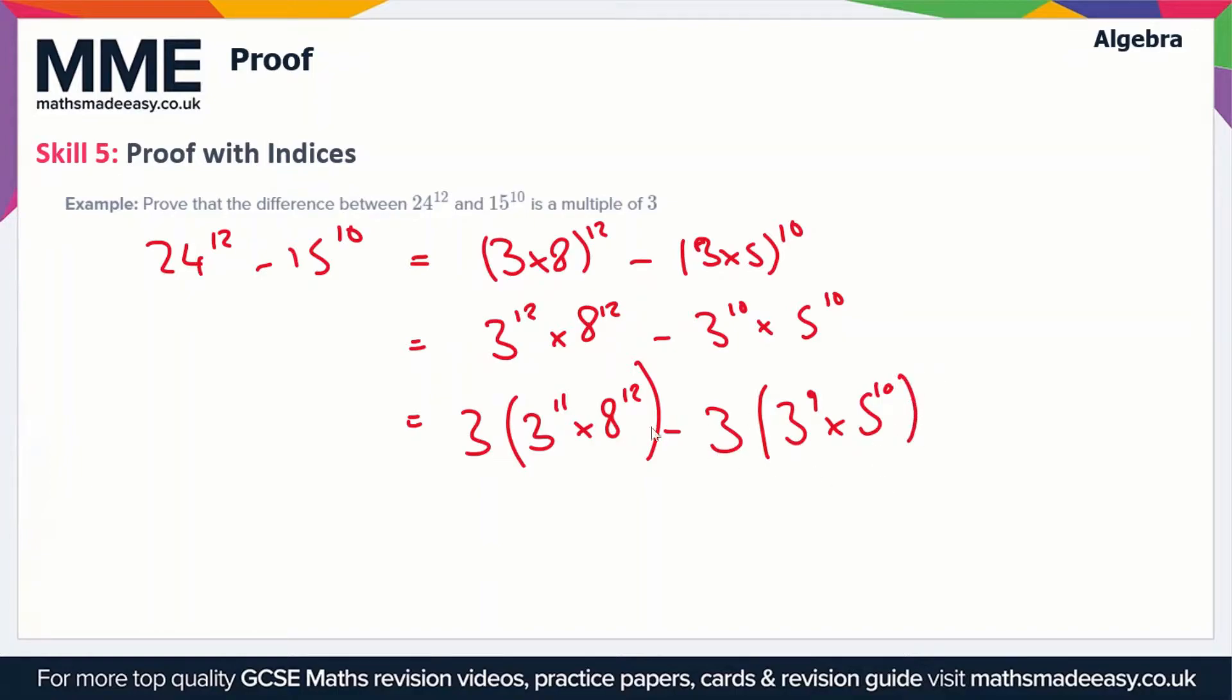These are just using basic indices rules, but here you can see we've got a factor of 3 outside of each of these brackets. We can take out the factor of 3 from both expressions and use a set of double brackets, so we've got 3 lots of (3^11 × 8^12 - 3^9 × 5^10). We've got 3 on the outside of this big set of brackets, and therefore this expression is a multiple of 3. We've managed to prove that the difference between these numbers is a multiple of 3.